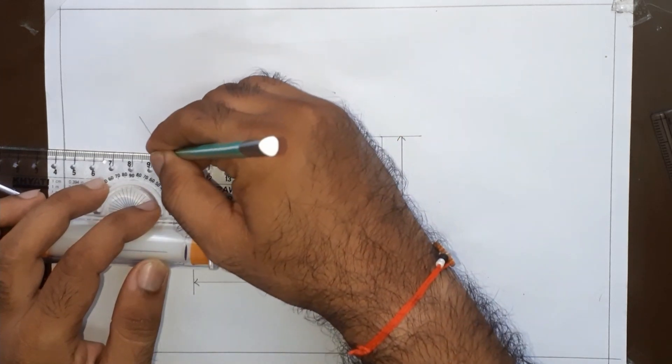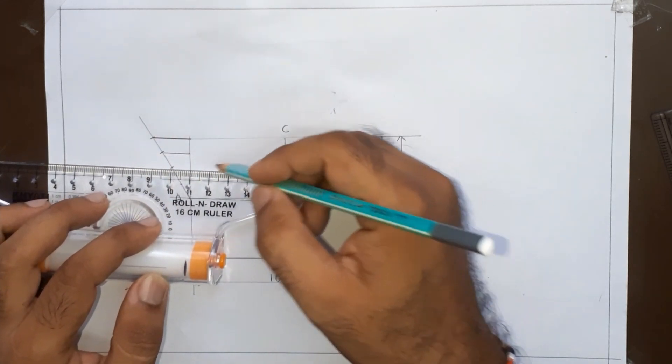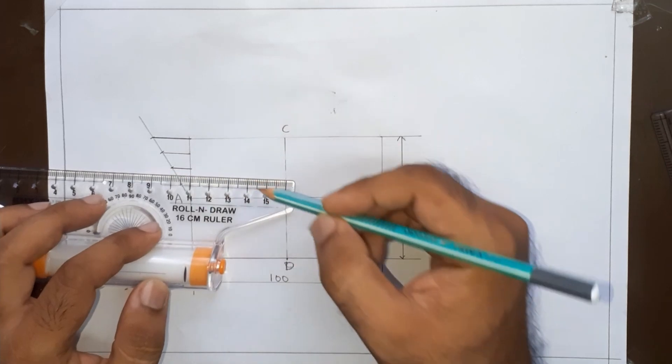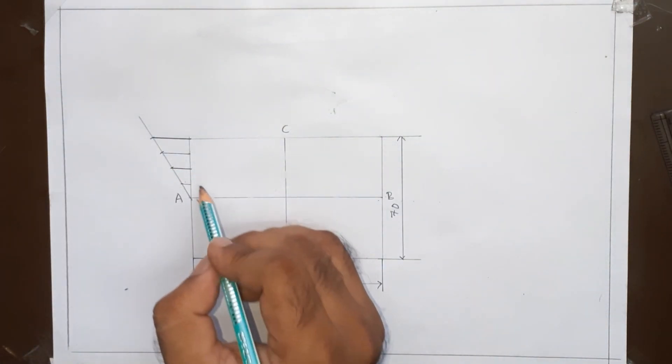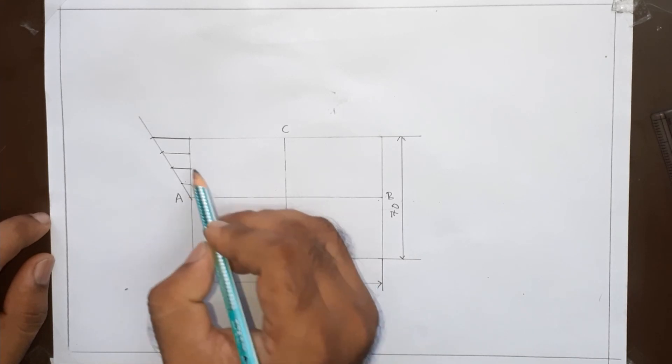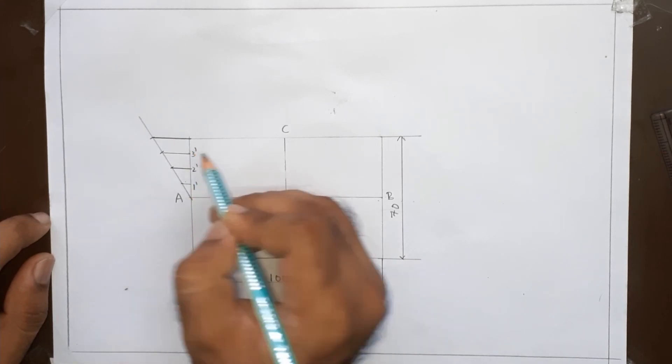Next take the mini drafter or any roller scale and then with this line as reference, join this line, next this line and then this line. Name these points as 1 dash, 2 dash, 3 dash.